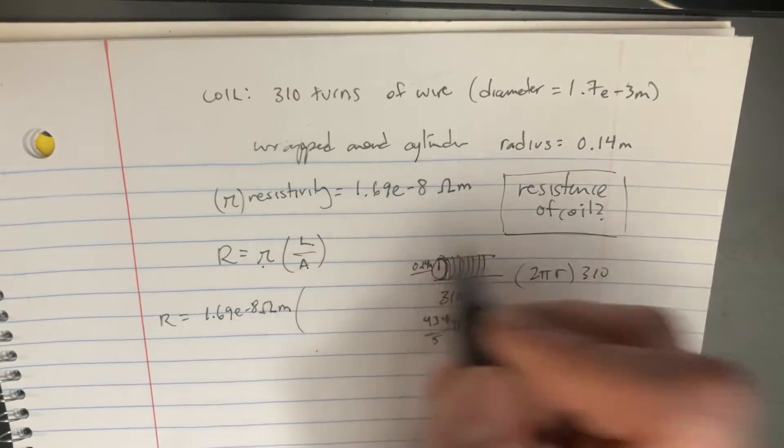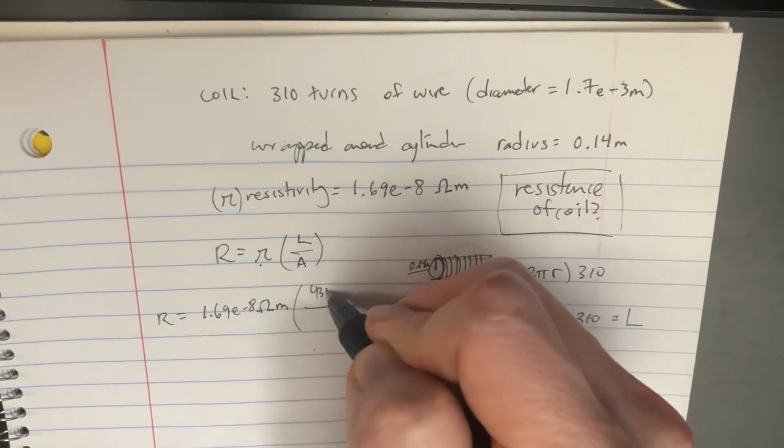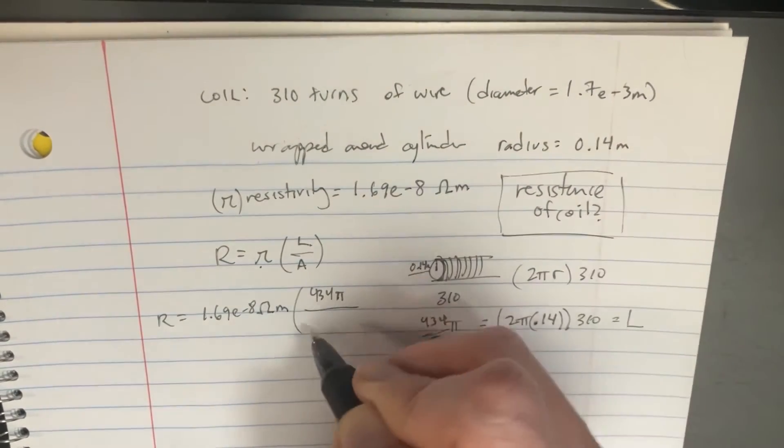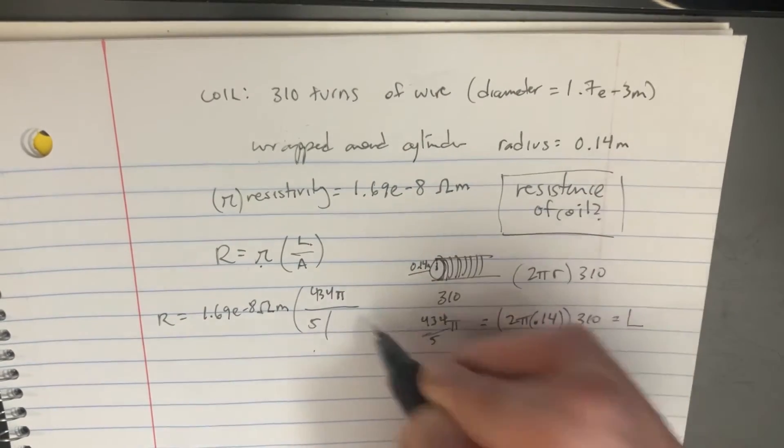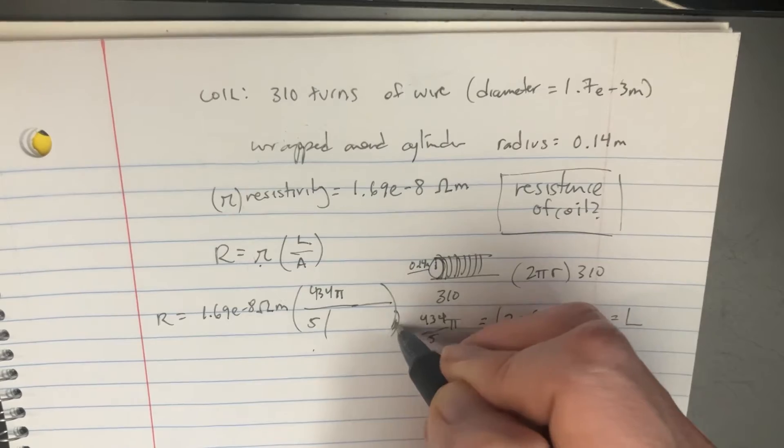And then this is going to be length, which is 434π, and I'll put the 5 down here at the bottom. But we're going to multiply that by whatever area we get. Alright, so we're close.